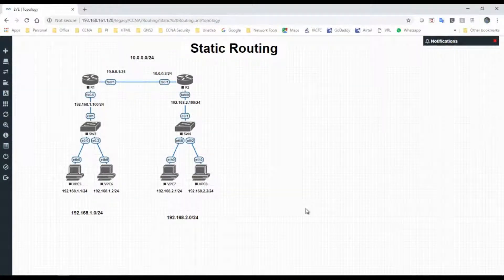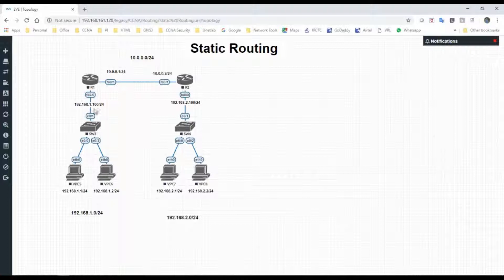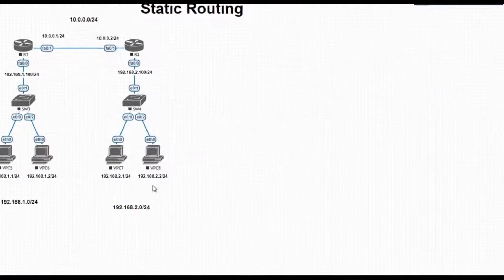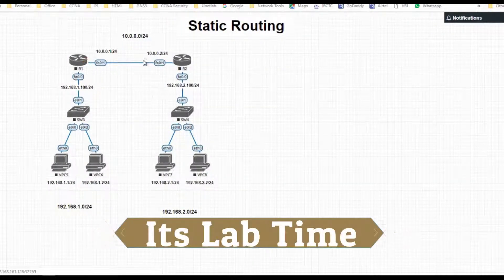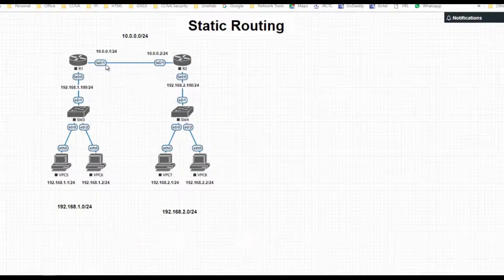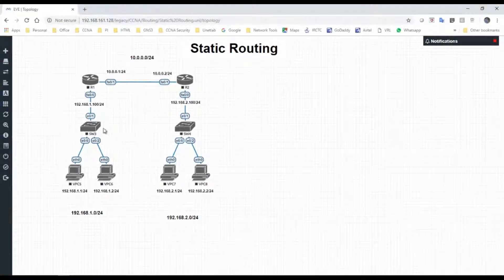Hello, welcome back. Today we are going to perform a small video on static routing. In this topology, I have a 192.168.1.0 network and a 192.168.2.0 network. In between R1 and R2, they are connected via the 10-series network. Let's start the lab.